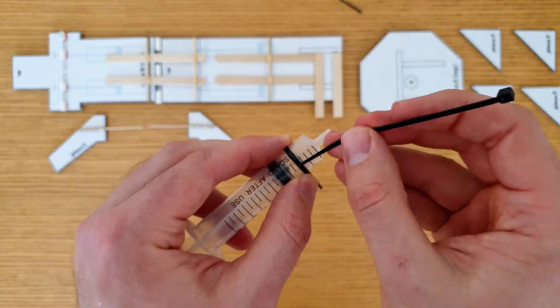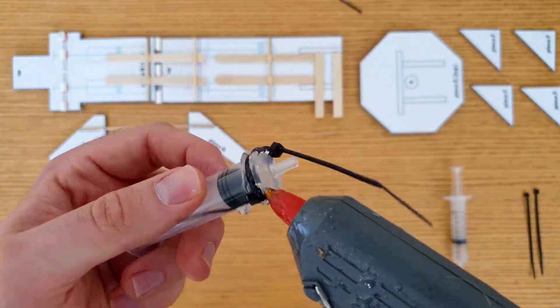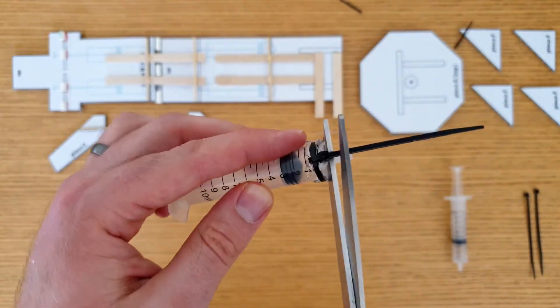When you do this, slide in another zip tie that's wide enough to fit a skewer. Use a hot glue gun to glue them in place, and then cut off these end bits.